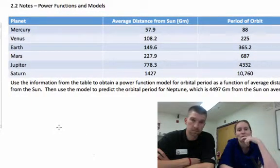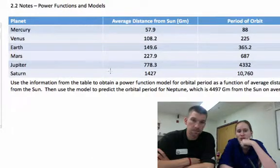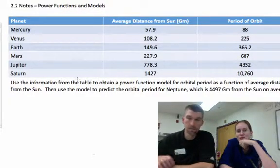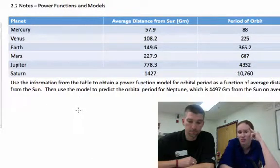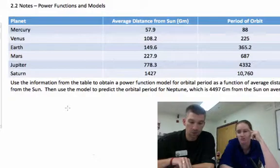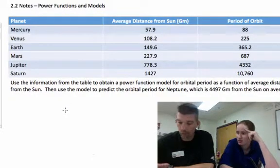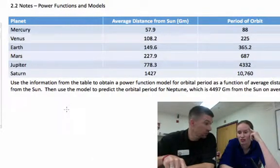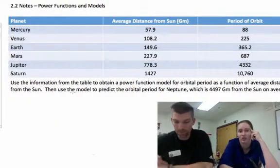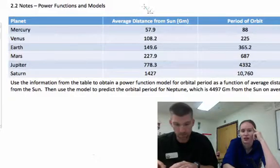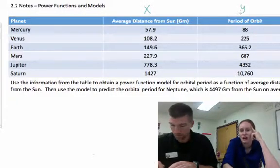Okay, so we want to use the info from the table to obtain a power function model for orbital period as a function of average distance from the sun. That sounds hard, but all you're doing is putting it in the calculator. So what am I putting into the calculator? Orbital distance for x and period for y. Yeah, this is our x's and these are going to be our y's.